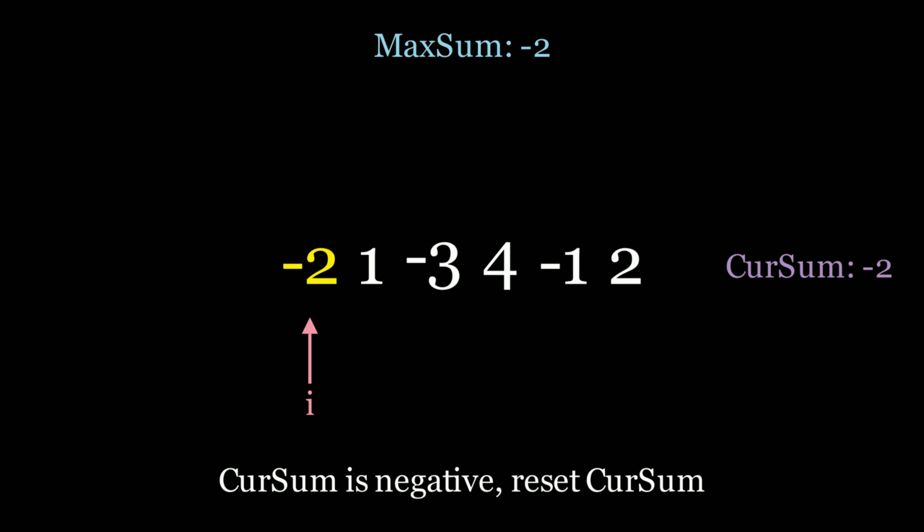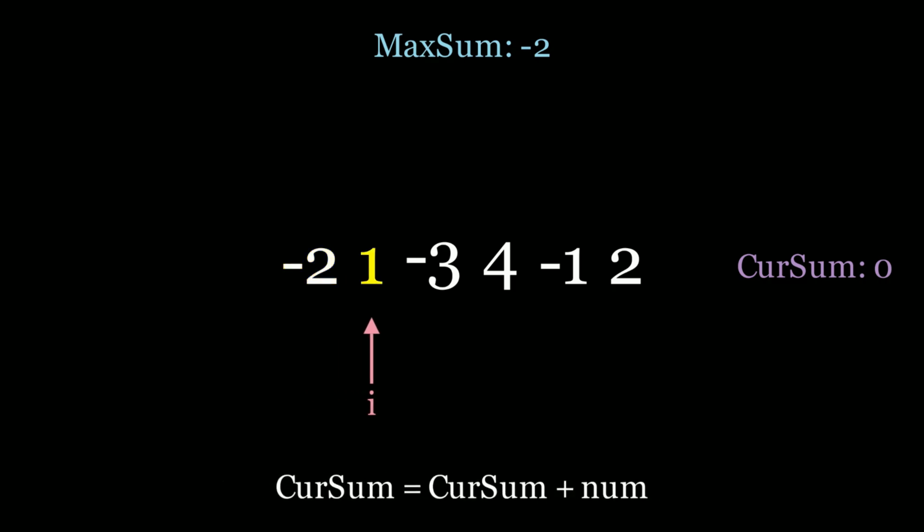And what this does is that it essentially allows us to ignore the current element and start or scan a new subarray at the next element. And so in this case current sum is equal to negative 2. We're going to reset cur sum to 0. It's better to be 0 than to be negative 2. And then we're going to move on to the next element. And this is kind of the approach we're going to take at every iteration.